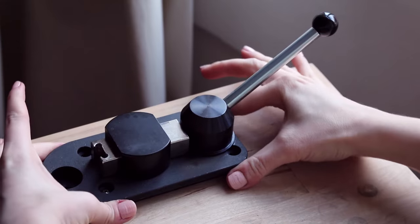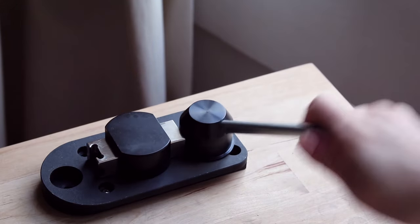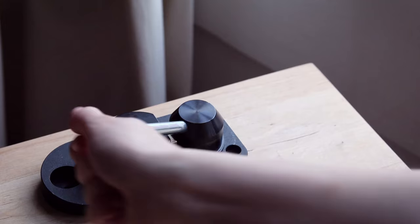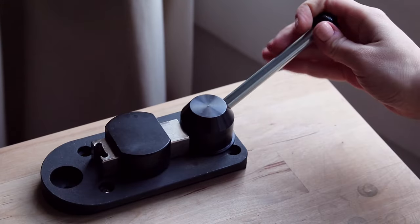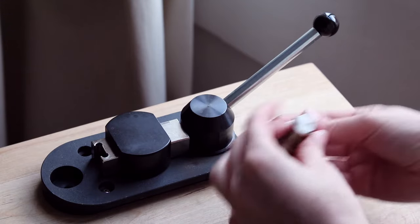In order to work properly, the main unit should be bolted down to the surface. Alternatively, you can use the bench vise to hold it firmly in place. Next, place the post and die in the tool.